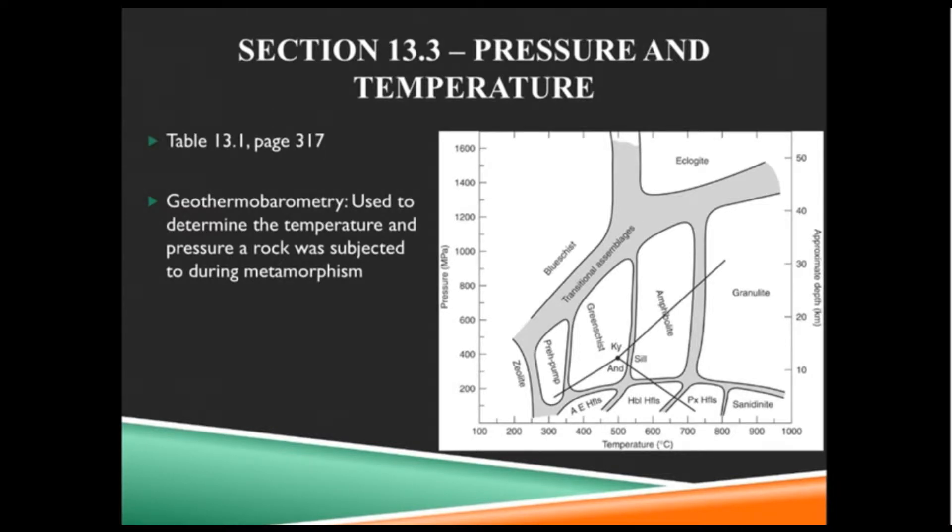The first thing I want you to really look at is how pressure and temperature affect what metamorphic rocks we get. Different metamorphic assemblages are created at different temperatures and pressures because different minerals are stable at different pressures and temperatures.